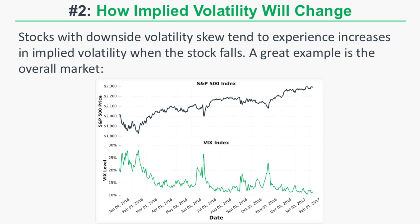Looking at a chart comparing the S&P 500 index and the VIX index — the VIX is the implied volatility of one-month options on the S&P 500. The S&P 500 typically trades with downside volatility skew, indicating risk is priced to the downside. The market tends to grind up slowly, but when it falls it does so rapidly and sometimes with very large movements. When the market falls, the VIX index tends to rise substantially, showing that as SPX falls, implied volatility of SPX options tends to increase.